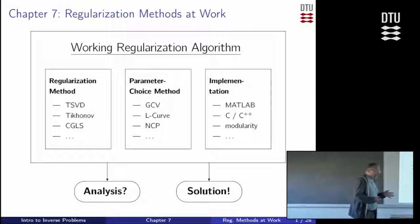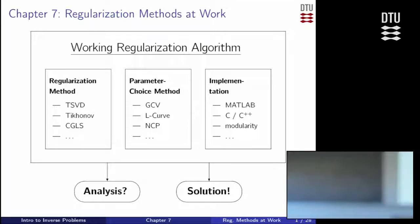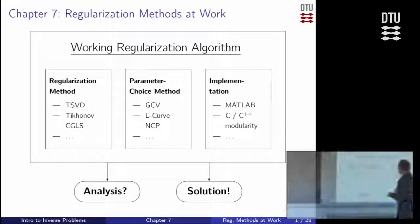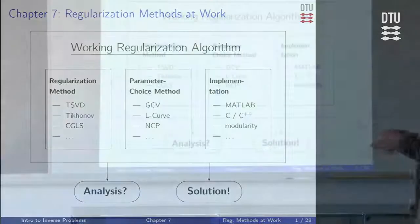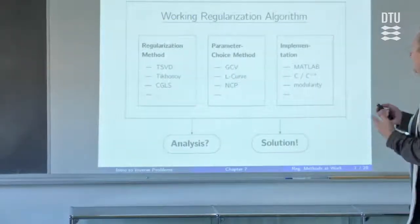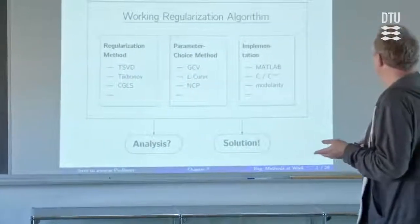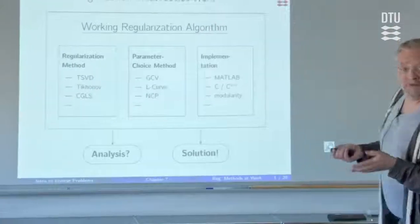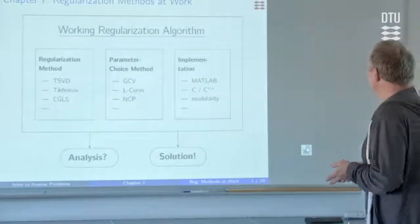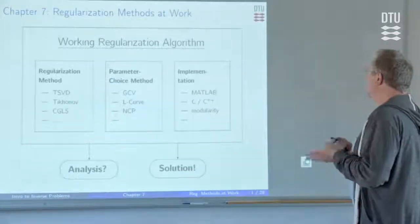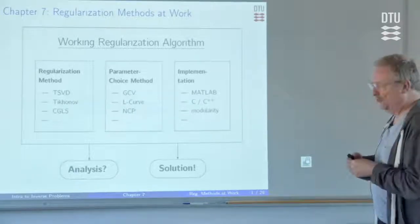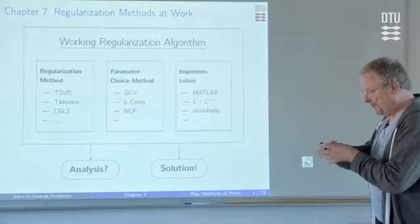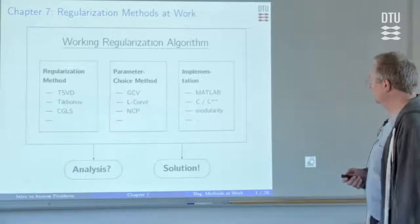Then there are other ingredients you also need to have. You need to have a parameter choice method — we talked about that already. That could be like the generalized cross-validation, or L-curve, normalized cumulative periodogram, or whatsoever. You need that because you want to automate the choice of the regularization parameter. And then finally, if you want to make this useful, you have to do an implementation in whatever programming language is suited for you, and you have to think about how you actually want to implement that — maybe by a set of modules that you can fit together.